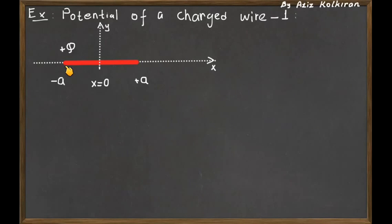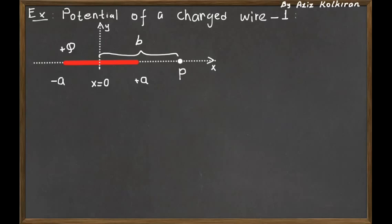The charged rod is on the x-axis and extends from x = -a to x = +a, giving a length of 2a with total charge q. The question is: what is the electric potential at a point located on the x-axis at distance b from the origin, or the center of the charged rod?